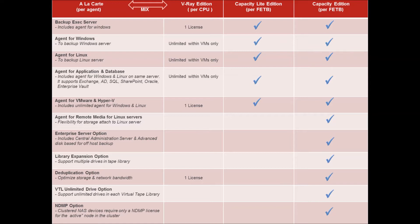The interesting part with V-Ray Edition is that you can mix it with Alacarte — which means that if there is a feature not included in V-Ray Edition and you need it, you can purchase it separately. However, you cannot mix Capacity Edition Lite with Alacarte; it can only be mixed with V-Ray Edition. So depending on the customer requirement, we can evaluate the most suitable combination.